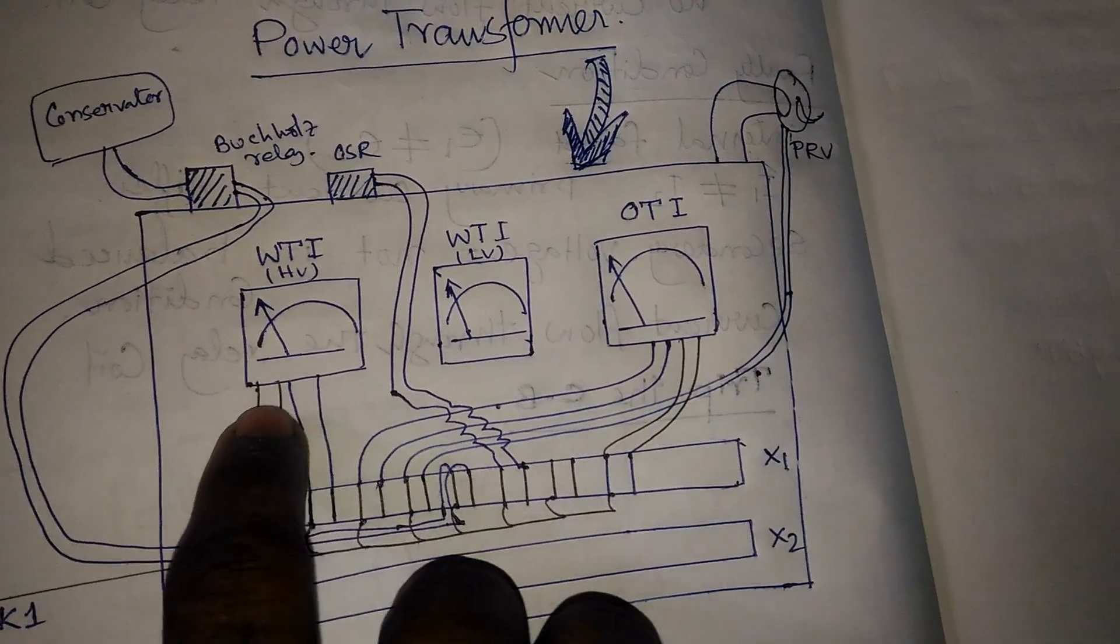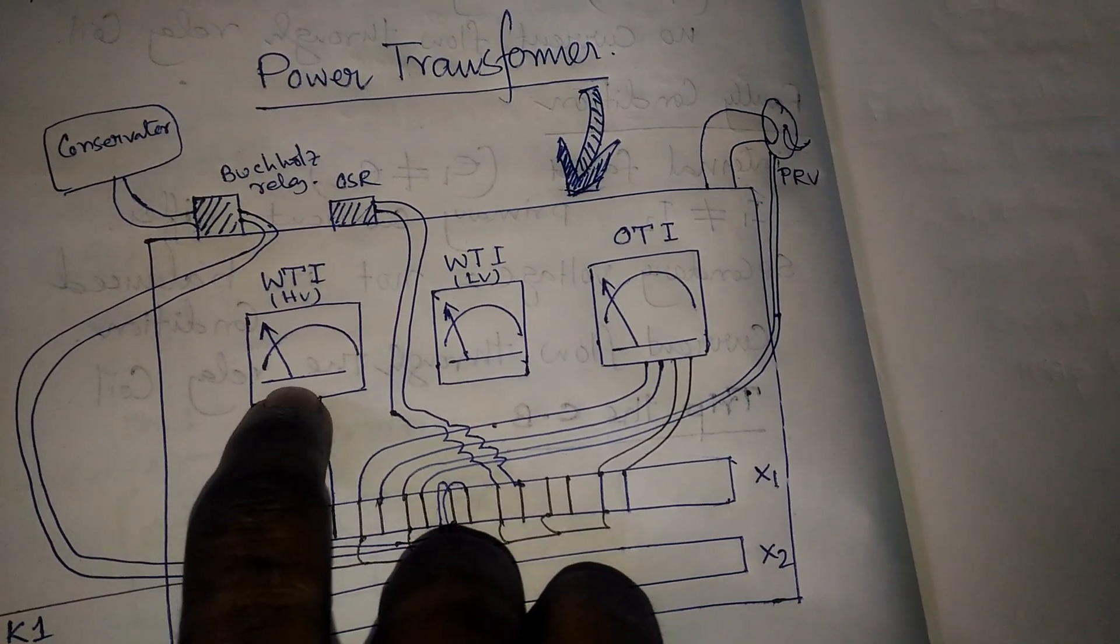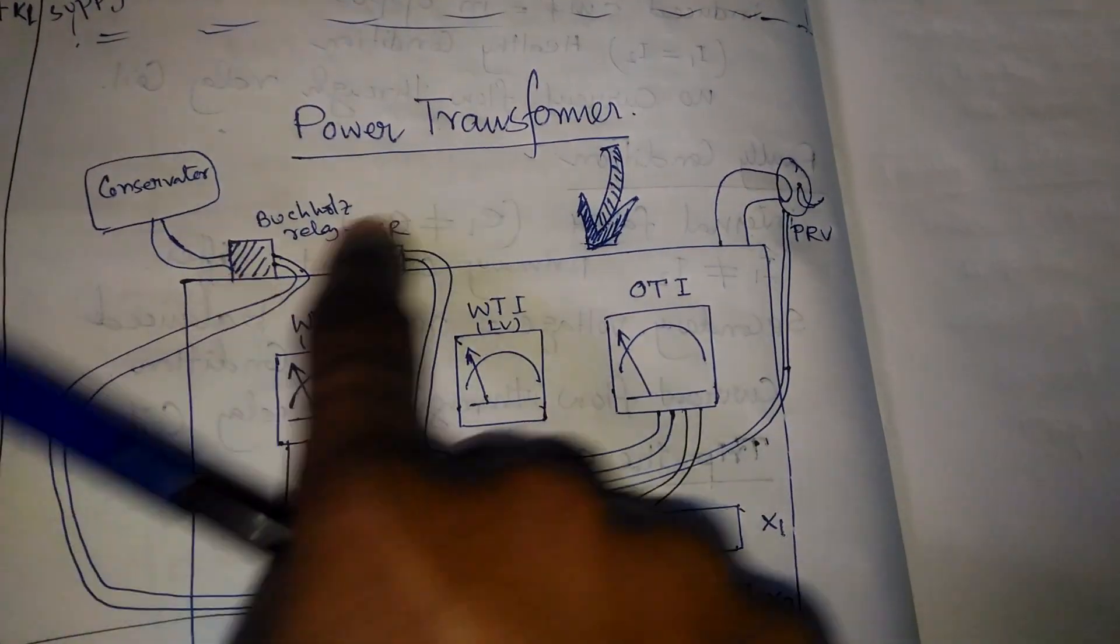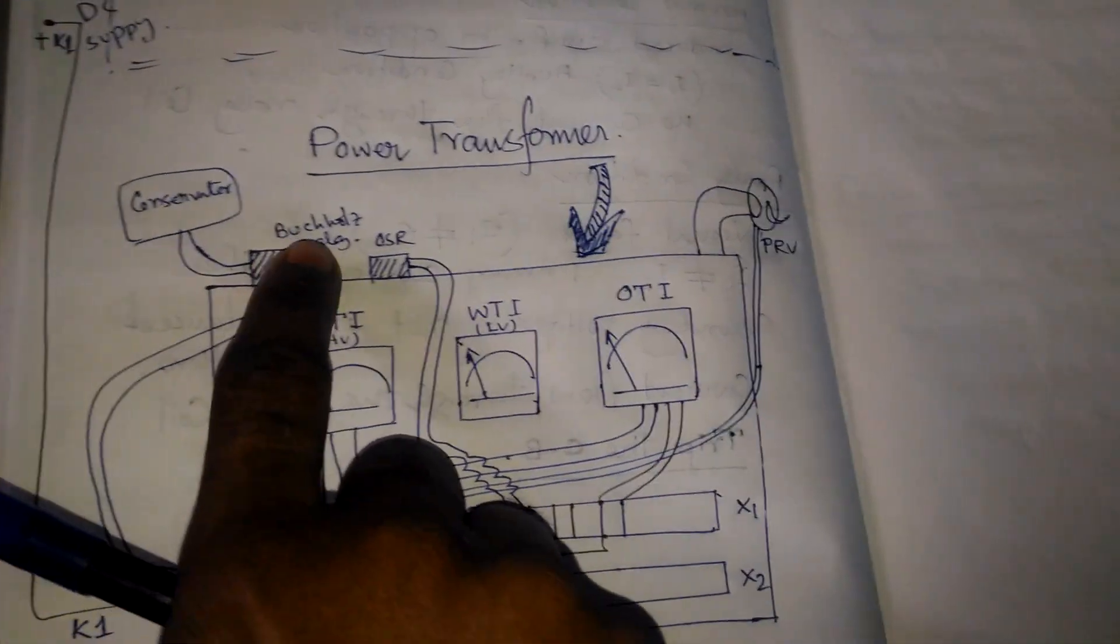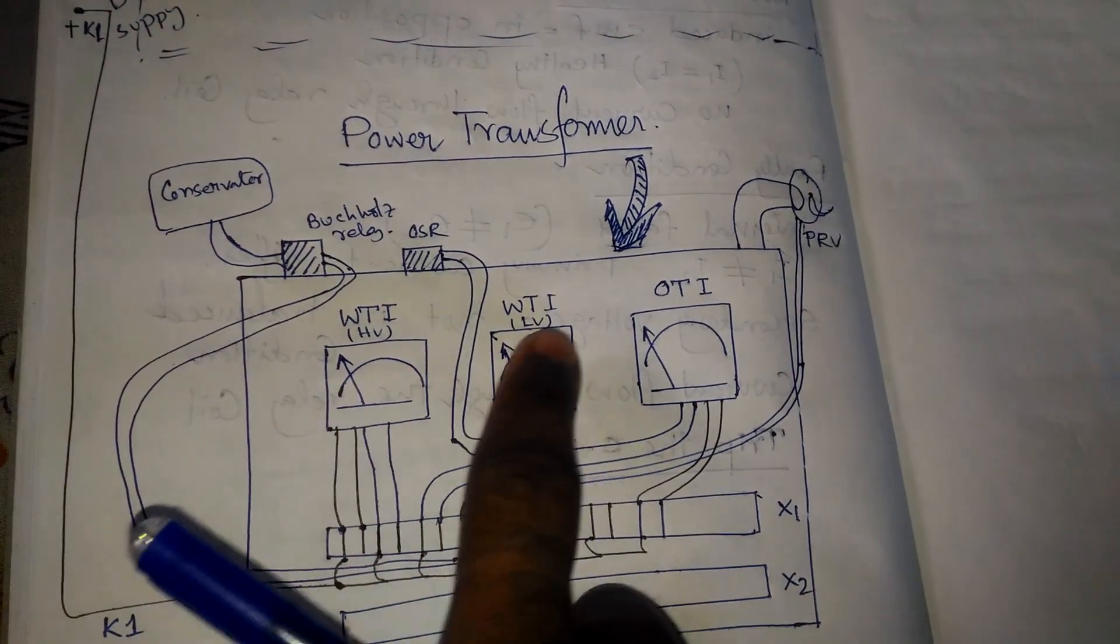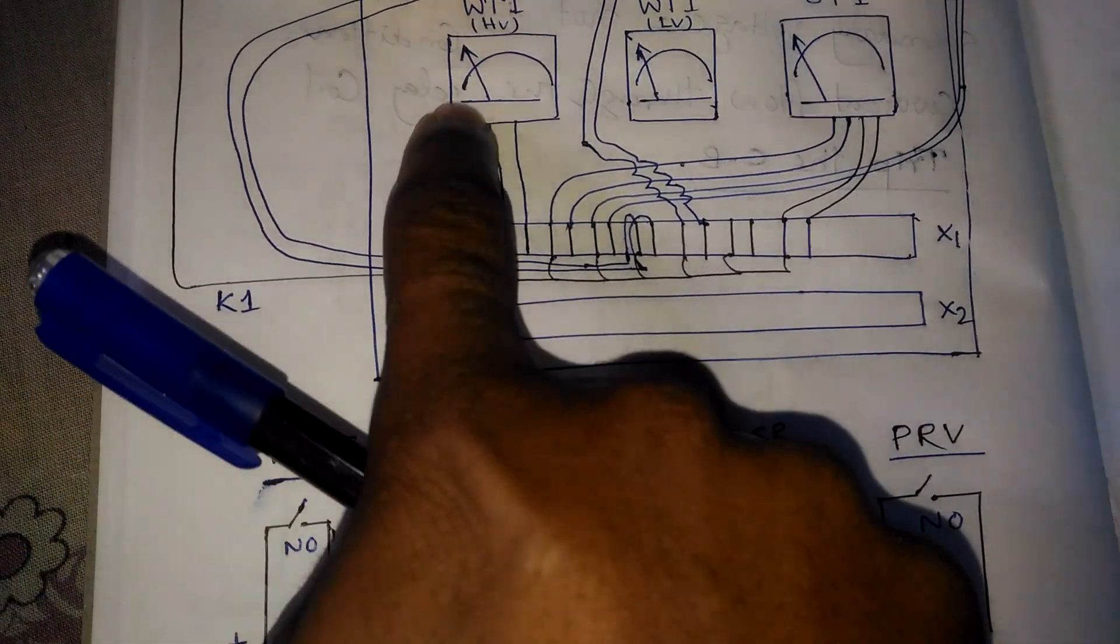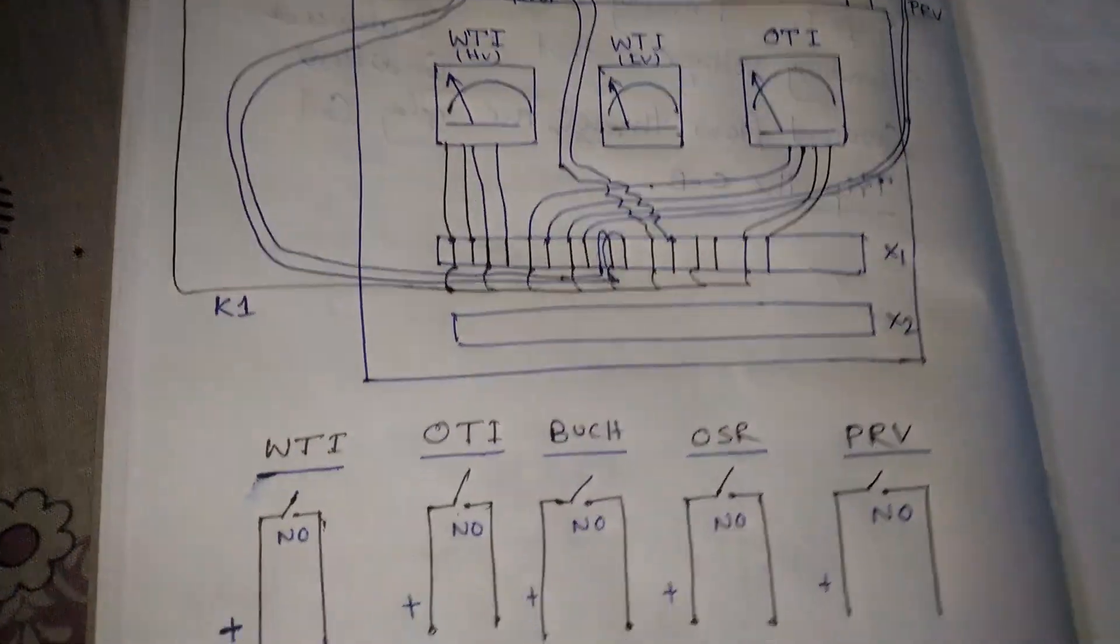This TB is connected with internal connections of the WTI, OTI, Buchholz relay, OSR, PRV, and all connections are connected to this TB. This Buchholz relay, OSR, PRV, WTI, OTI have NO contacts inside their terminals.